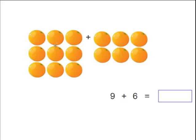These oranges represent this problem down here. Over here we have 1, 2, 3, 4, 5, 6, 7, 8, 9. Nine oranges plus 1, 2, 3, 4, 5, 6, plus 6 more. So 9 plus 6 equals what?